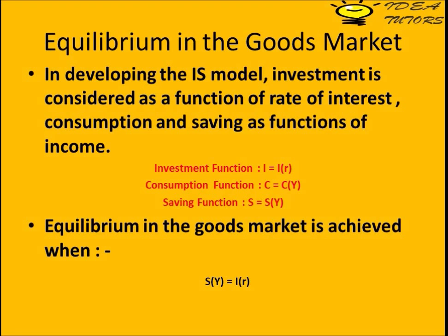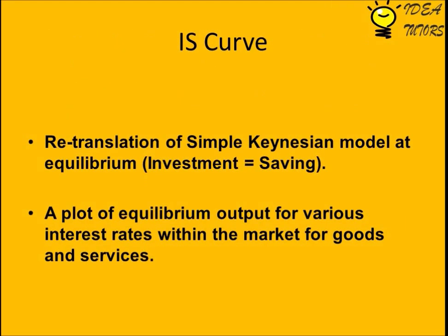Equilibrium in the goods market is achieved when savings are equal to investment. At all points on the IS curve, the goods market is in equilibrium. The IS curve is a plot of equilibrium output for various interest rates within the market for goods and services.